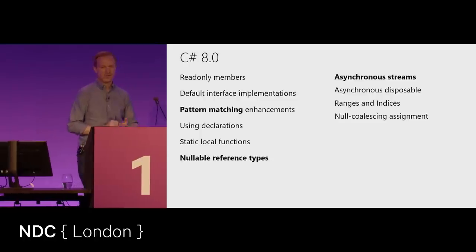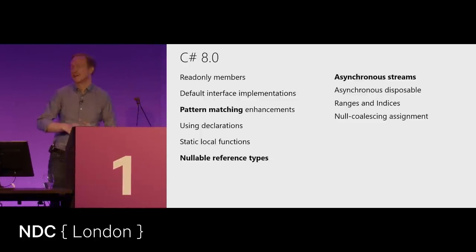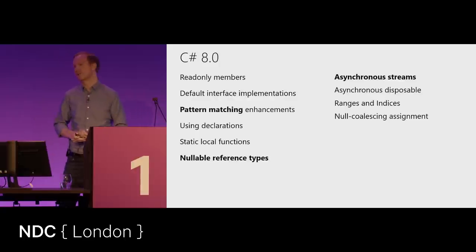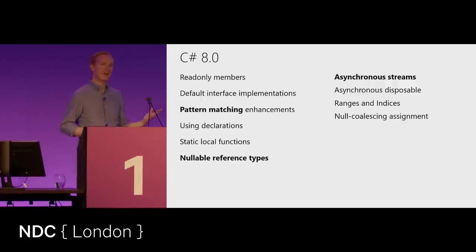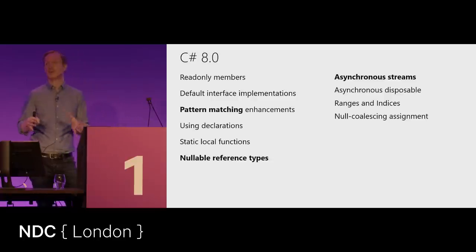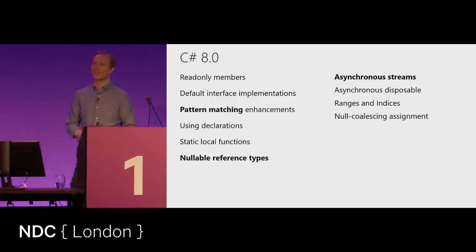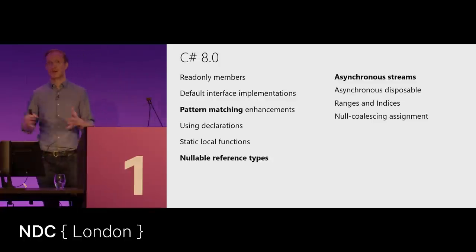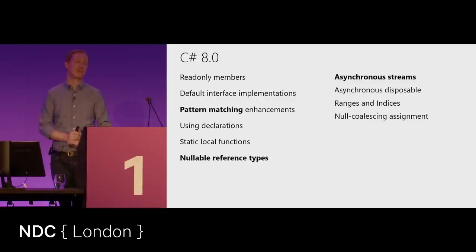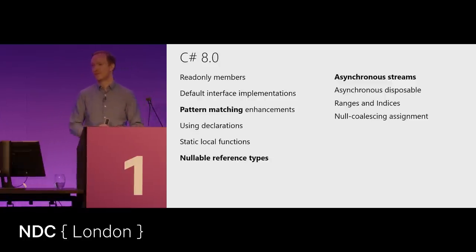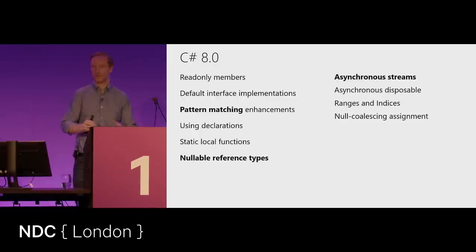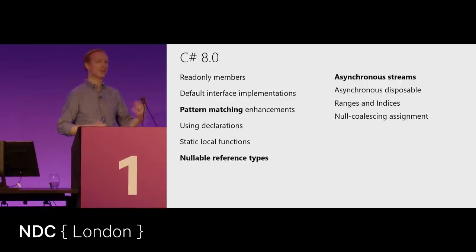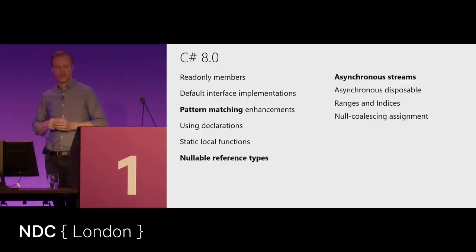As of C# 8, the eighth iteration of the language, there's still a lot of features being added — some are improvements to what was already there, others are really new concepts. What I like about the additions to C# is that the language team looks at other programming languages like F#, Kotlin, and Swift for inspiration, even talking to those language designers. When a feature makes it into C#, they make sure it feels like a C# feature, not just a Kotlin feature dropped into the language.